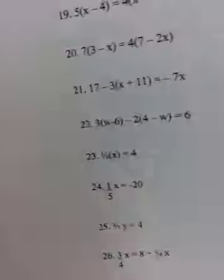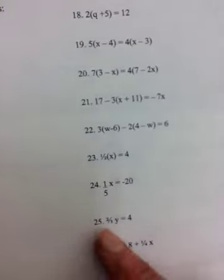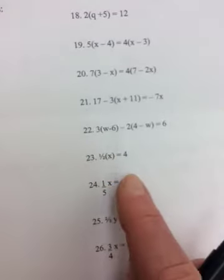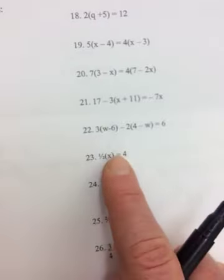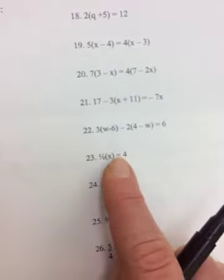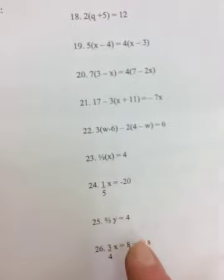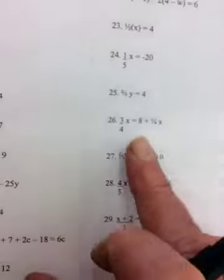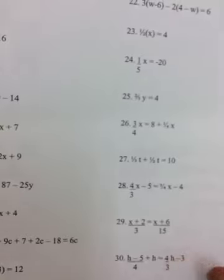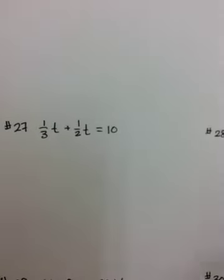So on the sheet, the next ones I think that are probably going to cause you issues are the ones with fractions. Because people tend to not like fractions. Number 23 and number 24 are probably okay, because it's just one term with fractions. So is number 25. 26 has two terms with fractions, but they're both 4s on the bottom. So the one I'm going to start with is number 27.